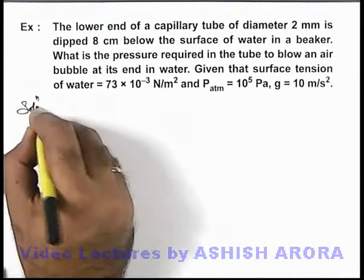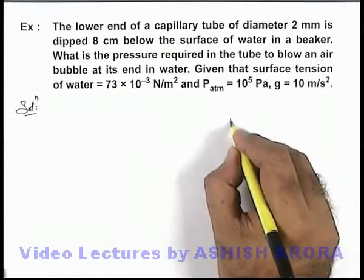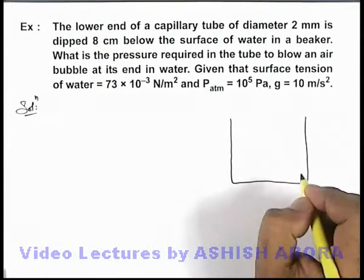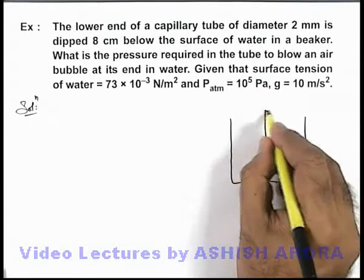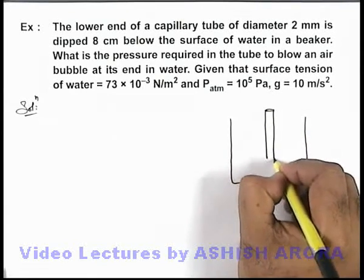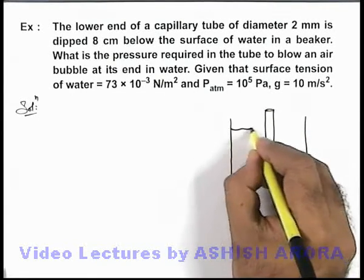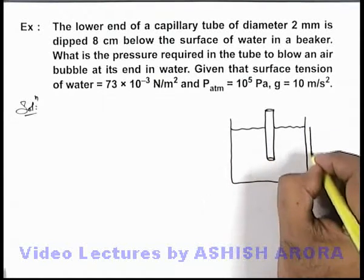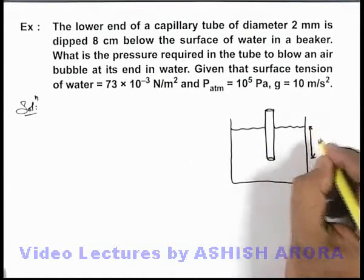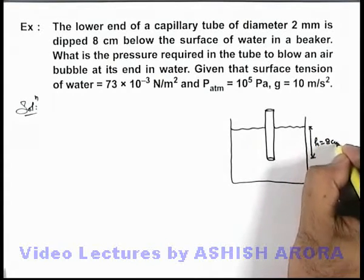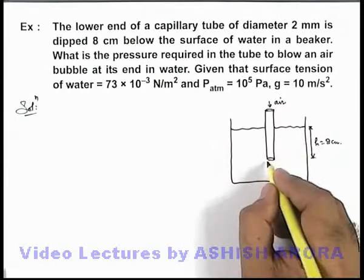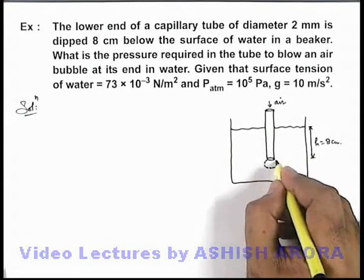Here if we draw the situation, we are given that inside a beaker, a capillary tube is dipped in water in such a way that its lower end is 8 centimeters below the free surface of water. We are given that this depth h is equal to 8 centimeters, and if we blow air from this side, an air bubble will be blown here.